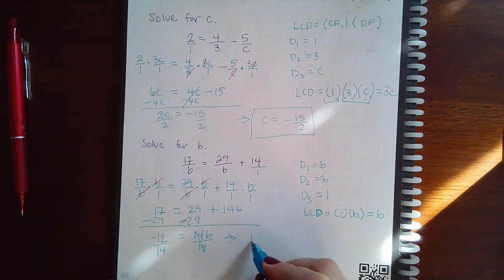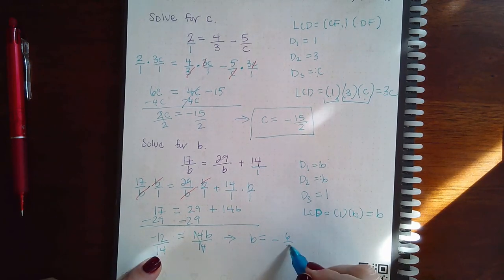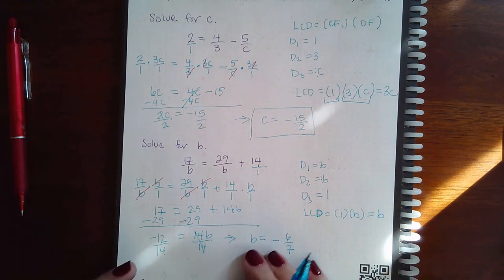So, again, we end up with that B equals a negative. And 12 over 14 reduces to 6 over 7. So, again, this is a potential solution.